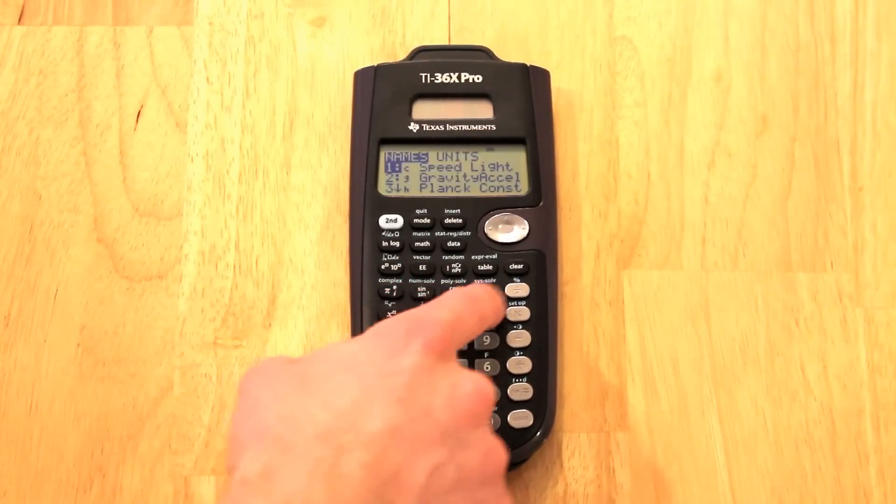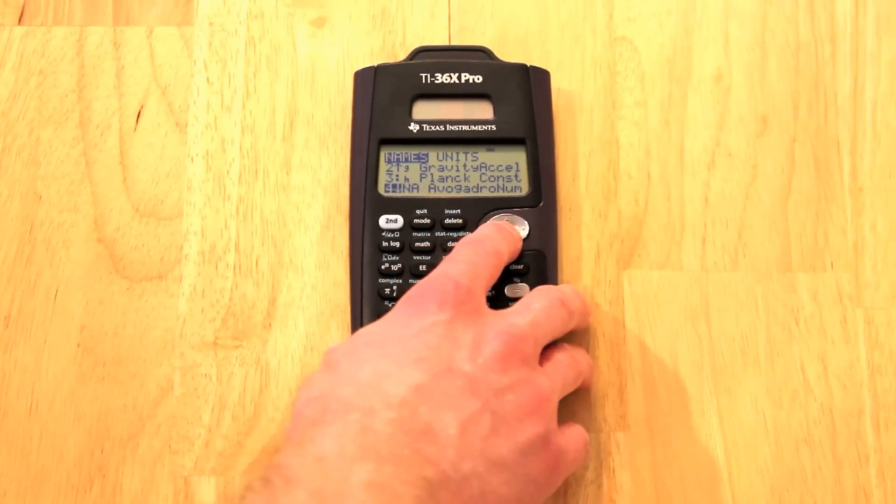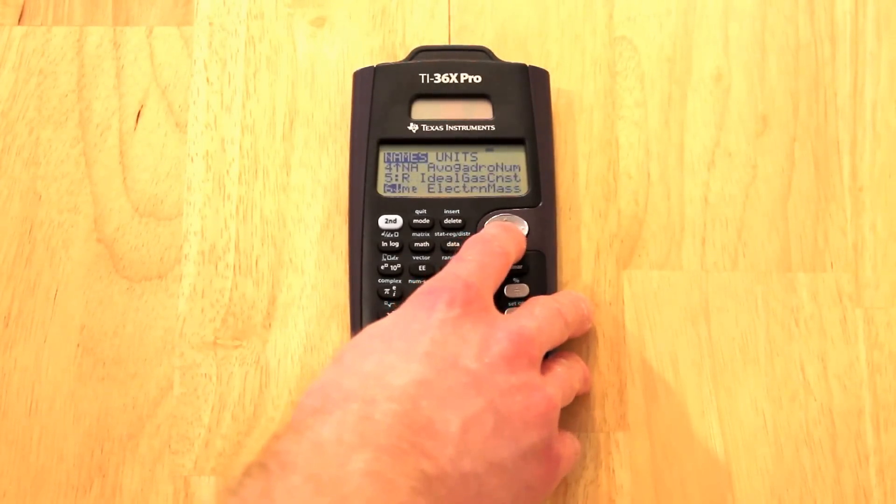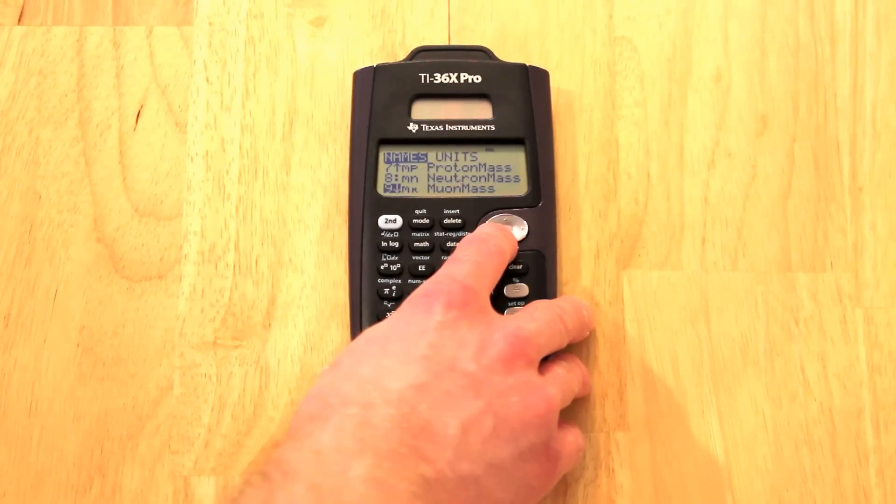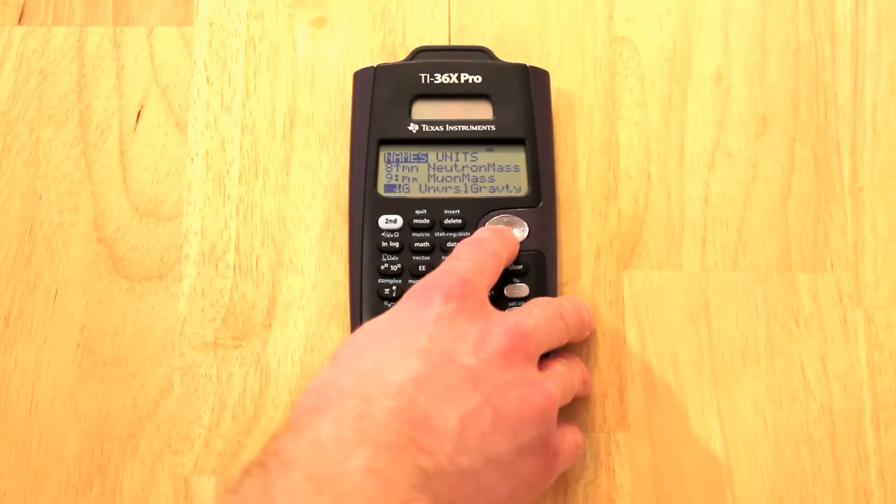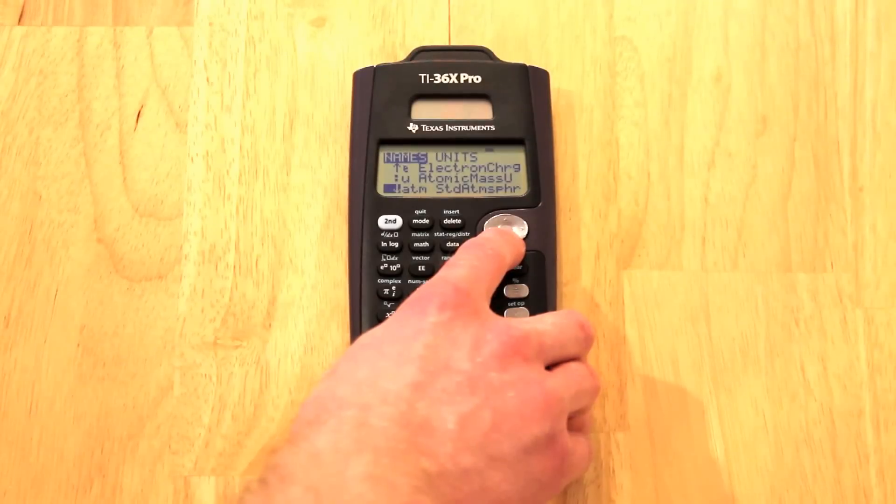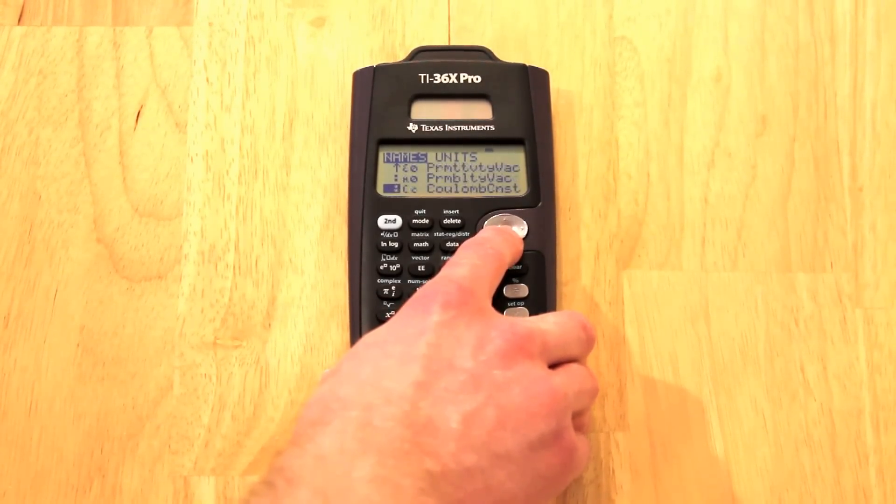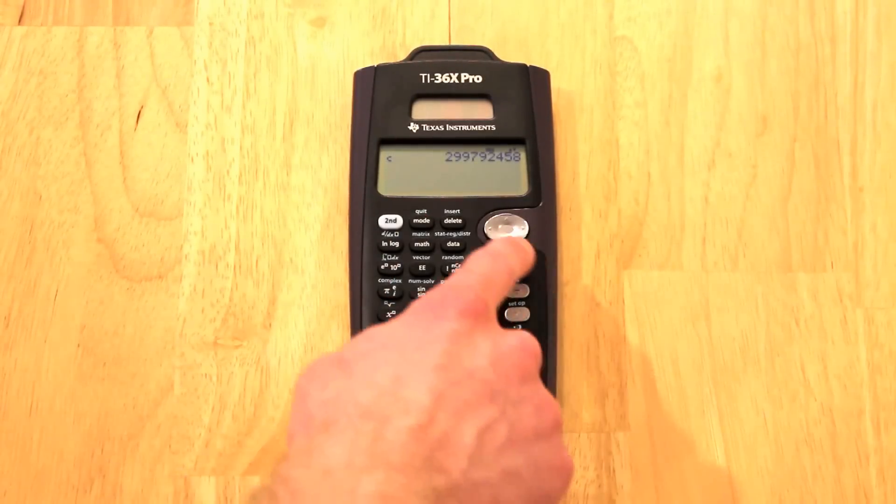I'll scroll through the list of constants so you can look through there. We have speed, gravity, Planck's constant, Avogadro's number, ideal gas constant, electron mass, proton mass, neutron mass, muon mass, universal gravity constant, Faraday constant, Bohr radius, electron radius, Boltzmann constant, electron charge, atomic mass unit, standard atmospheric pressure, and so on. They keep going. There's a list if you keep looking at it. But anyways, we'll clear out of this.